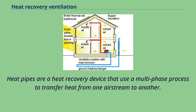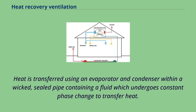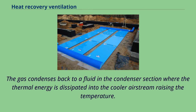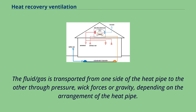Heat pipes are a heat recovery device that use a multi-phase process to transfer heat from one air stream to another. Heat is transferred using an evaporator and condenser within a wicked, sealed pipe containing a fluid which undergoes constant phase change. The fluid changes from liquid to gas in the evaporator section, absorbing thermal energy from the warm air stream. The gas condenses back to liquid in the condenser section, dissipating thermal energy into the cooler air stream and raising its temperature. The fluid/gas is transported from one side of the heat pipe to the other through pressure, wick forces, or gravity, depending on the arrangement.